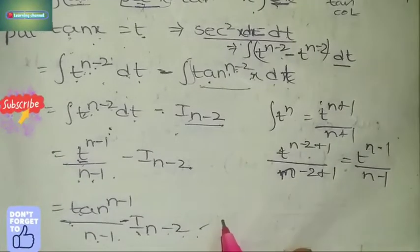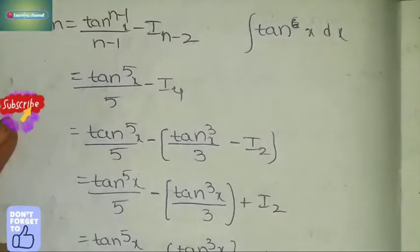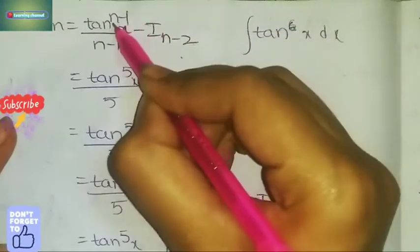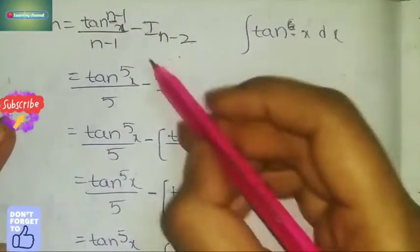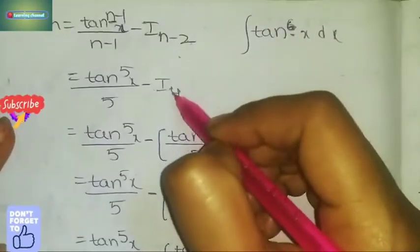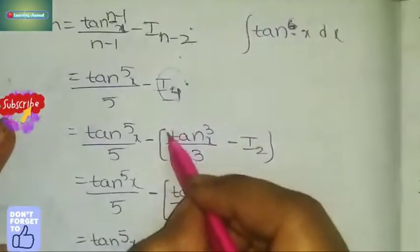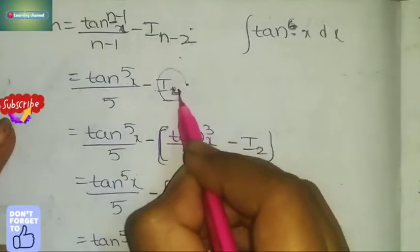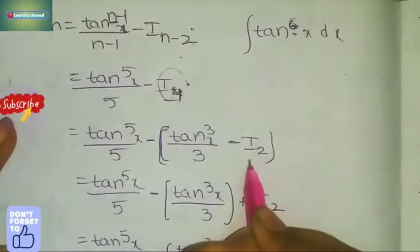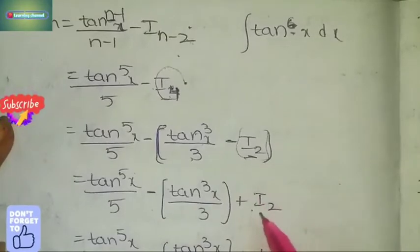Now that we have the formula, let's solve a problem. Evaluate integral tan⁶ x dx. Using the formula, substitute n = 6: I_6 = tan^(6-1) x / (6-1) - I_(6-2) = tan⁵ x / 5 - I_4. Now apply the formula again for I_4: substitute n = 4, giving tan³ x / 3 - I_2.